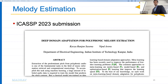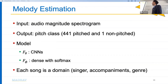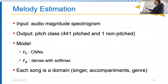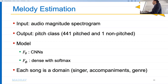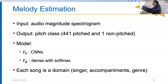One project submitted to ICASSP is melody estimation. Given music audio, we estimate the predominant pitch or notes. The input is a magnitude spectrogram. The output is a classification among 441 pitch classes plus a silence class. The model has two parts: F-theta made with CNNs, and F-phi, a dense layer with softmax activation. We treat each song as a domain or new task, differing in singer, accompaniment, genre, and other factors.